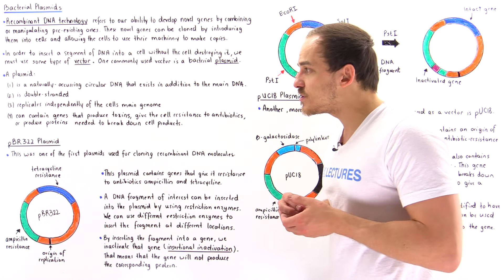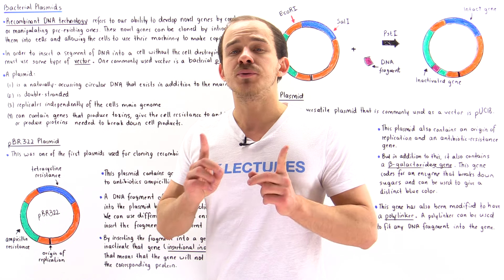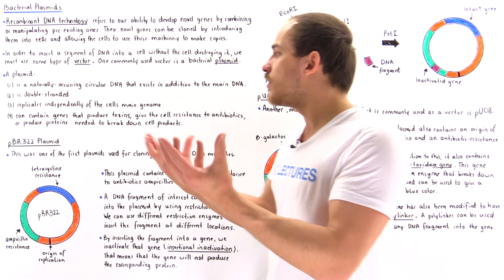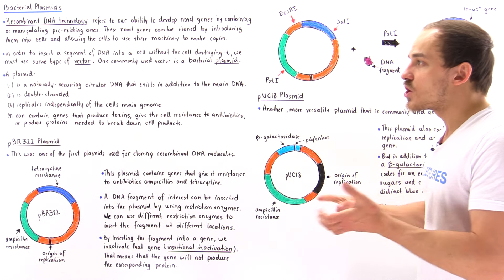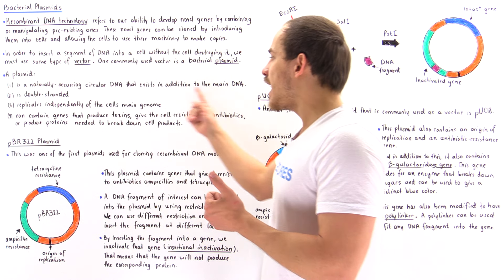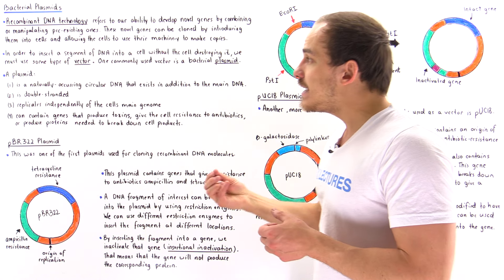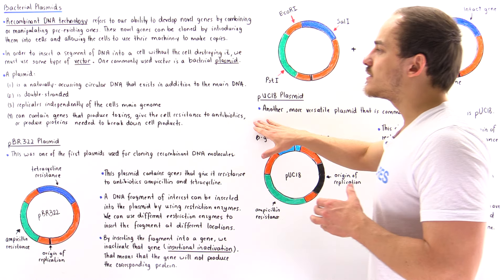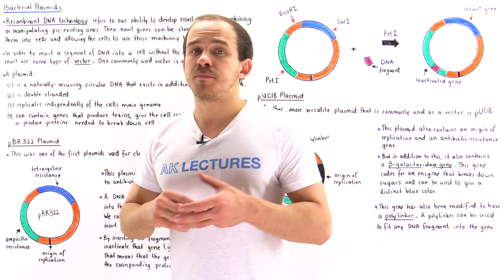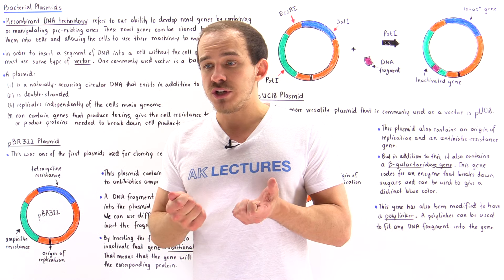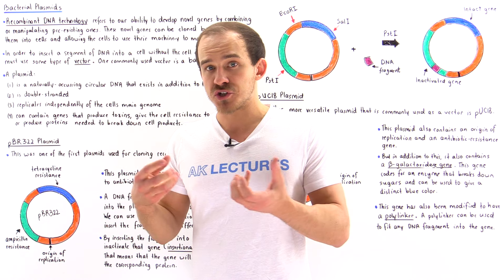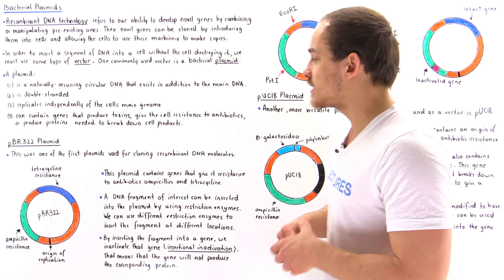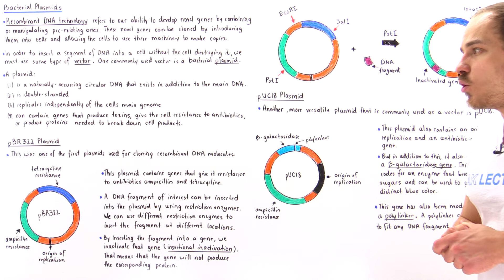The entire purpose of a plasmid is to contain special genes that give the cell special abilities. For example, these plasmids can contain genes that produce special toxins to protect the cell, or genes that give the cell resistance to antibiotics, or genes that code for special enzymes that help the cell break down different types of products.